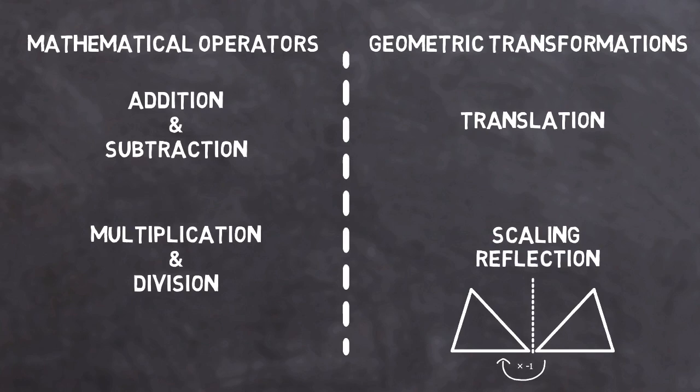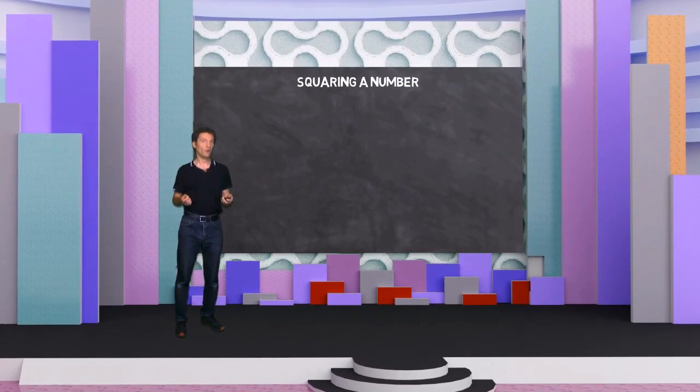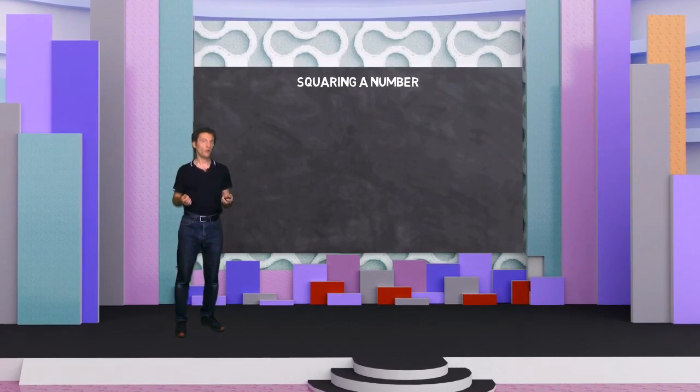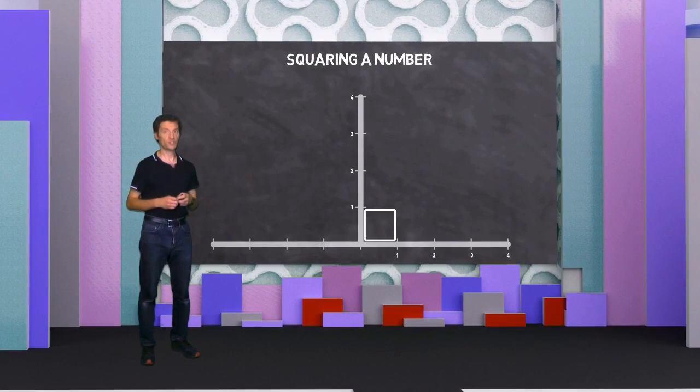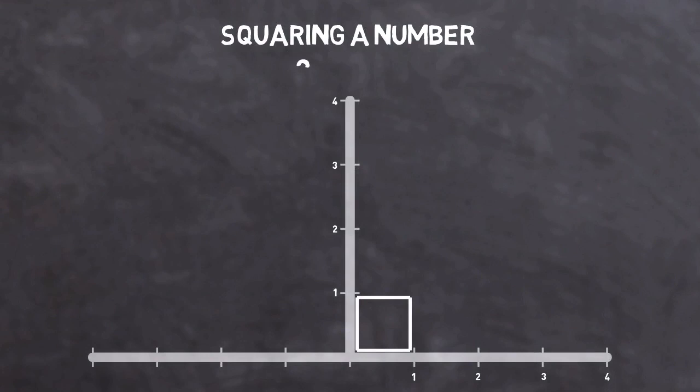What about squaring a number? How could we represent that in geometric terms? Whenever we square a number, we could think of it as starting out with the unit square. That's a square whose width and height are both one. And applying the same multiplication twice to that unit. So if I wanted to represent 2 squared, I scale the unit square by 2, and then by 2 again.